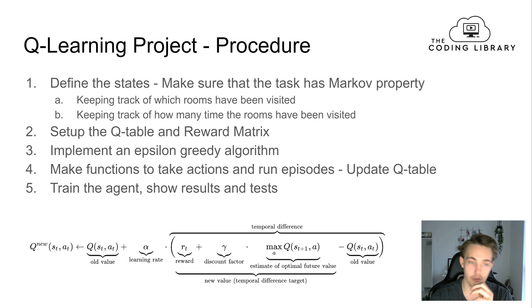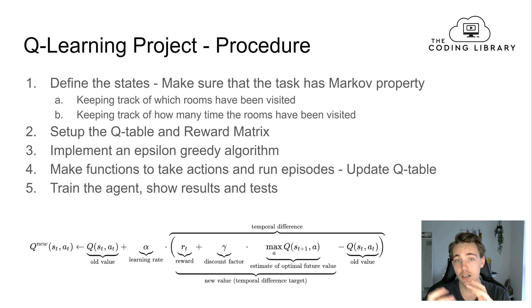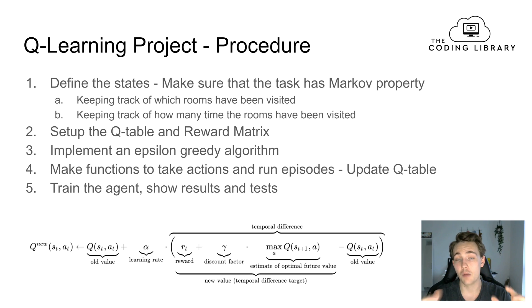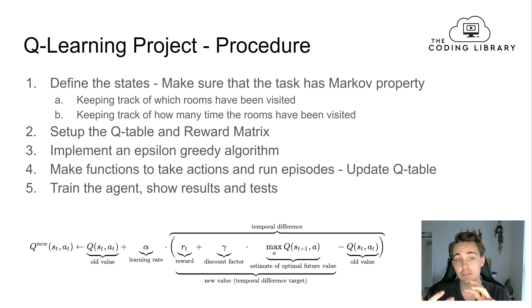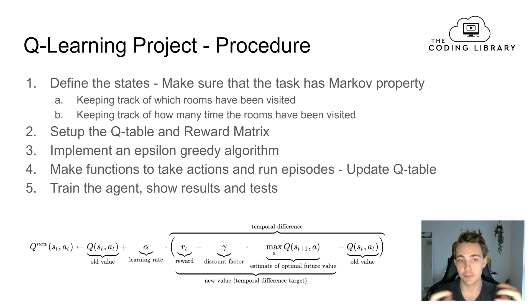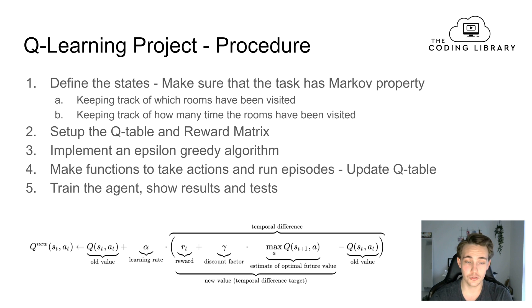To ensure the Markov property, we keep track of which rooms the agent has visited and how many times each room has been visited. The agent needs to know this because we don't want it to re-enter a room more than once — if it does, the reward will already be taken and it will receive zero reward. We build this memory into our state to ensure it only depends on the current state.